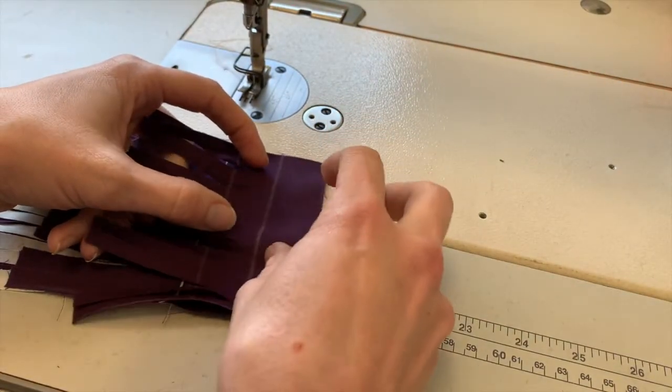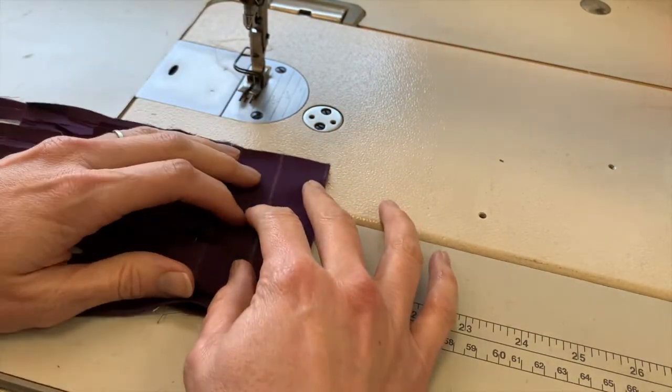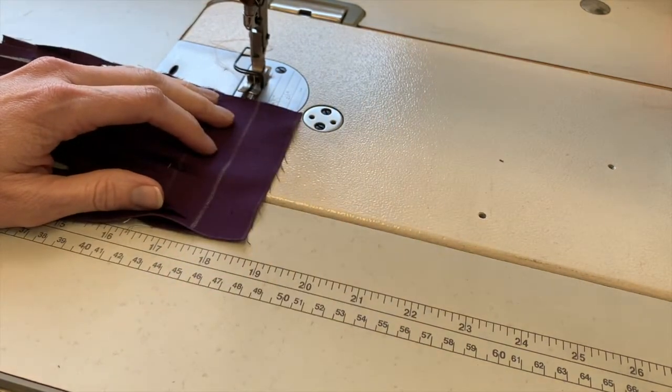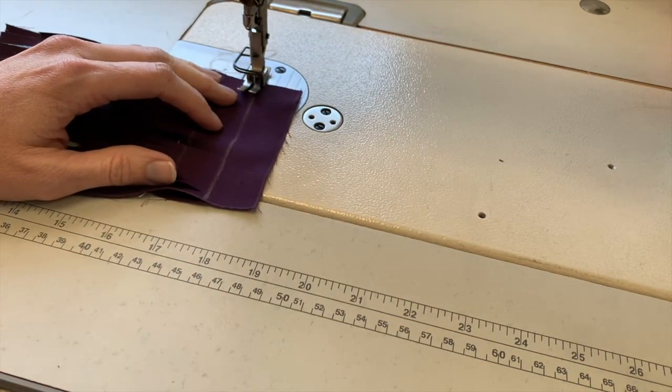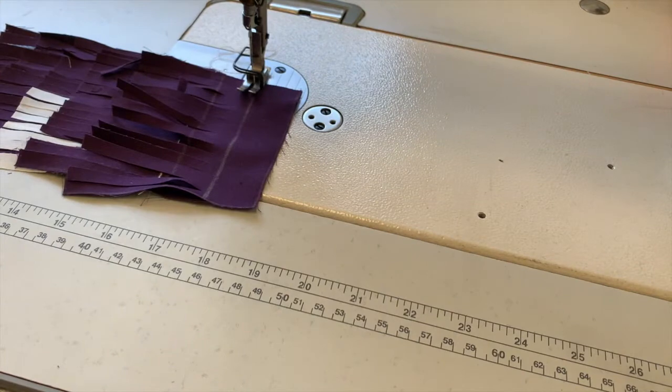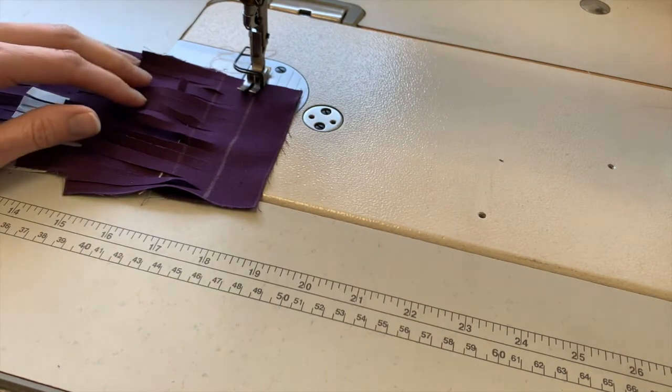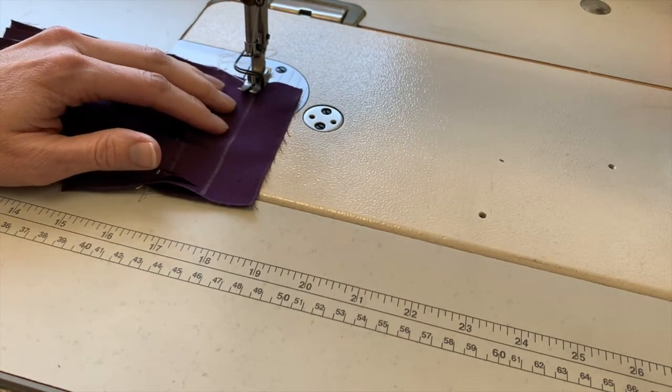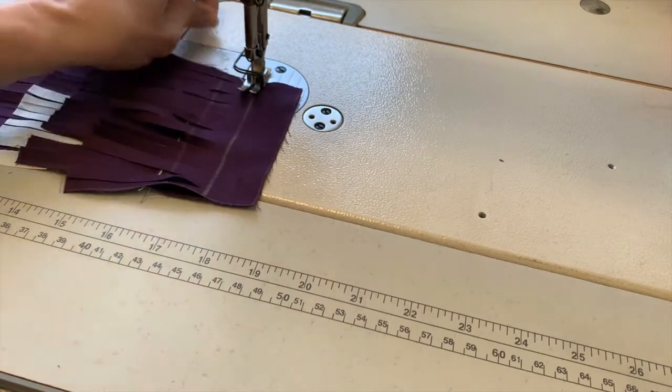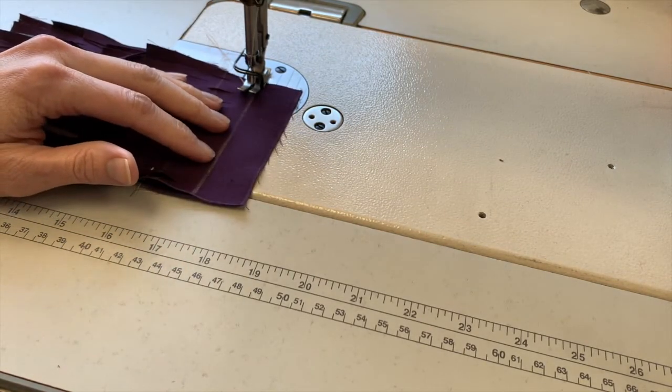Remember when sewing to line the 1 inch mark of the top layer of fabric with the edge of the bottom layer of fabric. Place the presser foot slightly below the 1 inch mark on the top layer of fabric to make sure to sew the top layer to the bottom layer of fabric. Sew along the line.